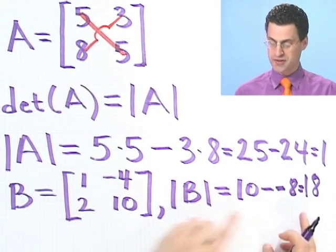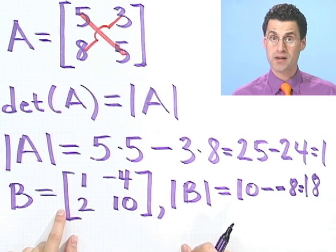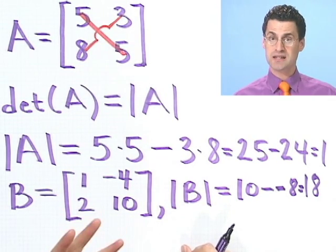So the determinant of this matrix turns out to be 18. If the determinant of a matrix is not equal to 0, if the number we figure out is not 0, then we call the matrix non-singular. So non-singular just means that the determinant of that matrix isn't 0.